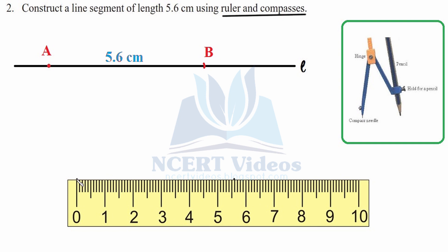Pick up the compasses and place the needle at point A on the line — you can place it anywhere on the line — then put an arc. Wherever the arc falls, that will be your length. Using compasses has very little error compared to using only a ruler, so that will be your 5.6 cm line.